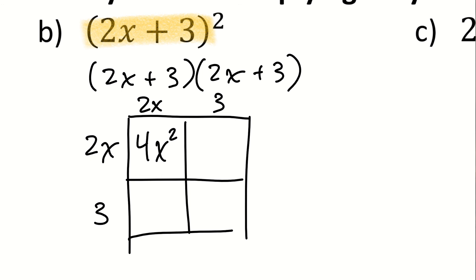To the right of that, I have 3 times 2x, which is 6 times x. To the bottom left, I have 2x times 3, which is also 6 times x. And then in the last box down on the lower right, 3 times 3 is 9.